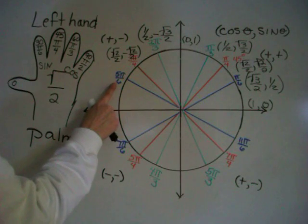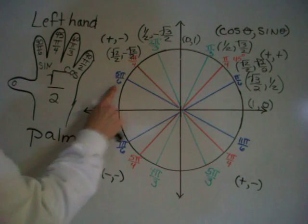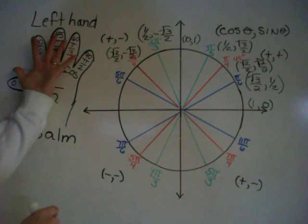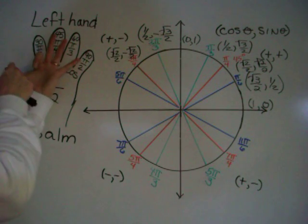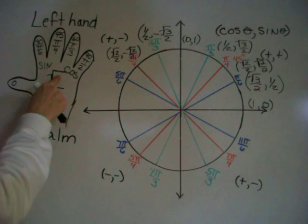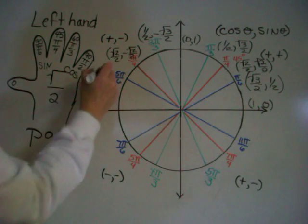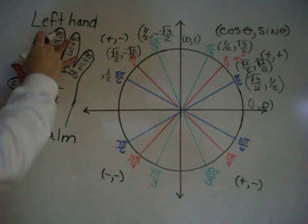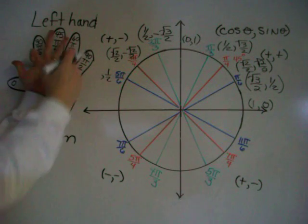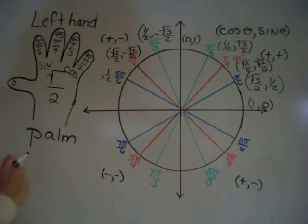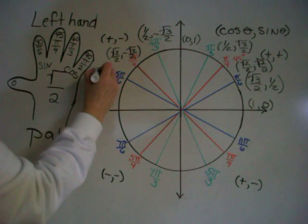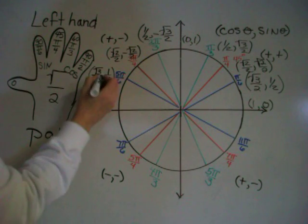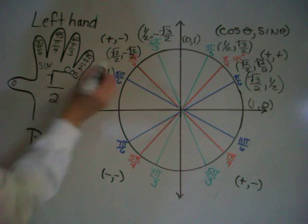I'll finish the last one here. Pi over 6, the same right here. So I'm going to use my first finger. Put down my first finger. The sine is 1, goes in here, 1 half. Cosine is the second side. So I have 3. 3 goes in here. Square root of 3 over 2. Of course, in this quadrant, my second number has to be negative. So I put a negative there.